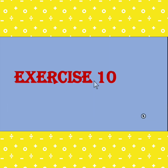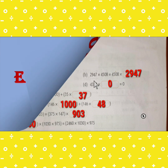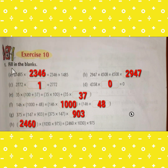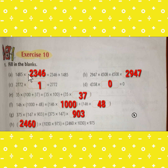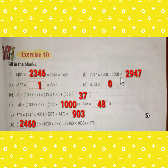Now we are doing Exercise 10, Question 1 — filling in the blanks. First: 1485 into blank equals 2346 into 1485. Here we use the order property: A into B equals B into A, so the blank value is 2346. Similarly, using the order property, the missing A value is 2947.